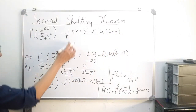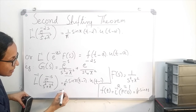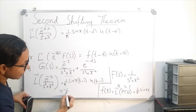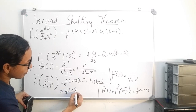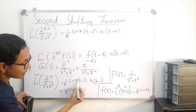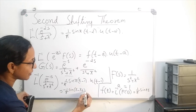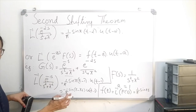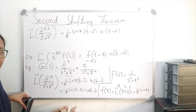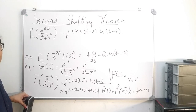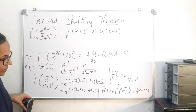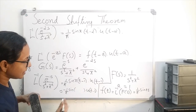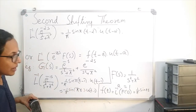Now simplify these two functions. The first term, 1 over pi times sin pi(t minus 1), can be written as minus 1 over pi times sin of pi minus pi t. This is of the form sin(pi minus theta), and since sin(pi minus theta) equals sin theta, it simplifies to minus 1 over pi times sin of pi t times u of t minus 1.